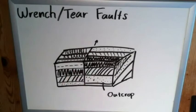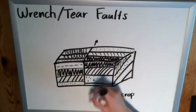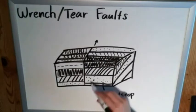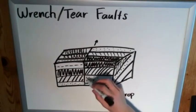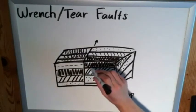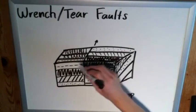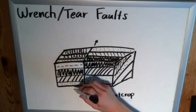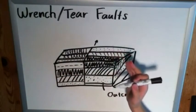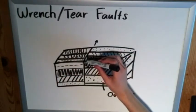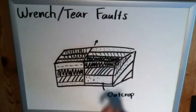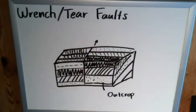If you ever see something that looks like this, it's tempting to say that's either a normal or a reverse fault, because just looking at the outcrop it appears as though the strata on one side have been shifted upwards or the strata on the other side have been shifted downwards. But when you take a look at the whole picture, you can clearly see there has been some lateral displacement, which means it is a strike-slip fault — and specifically, it's a wrench or a tear fault.